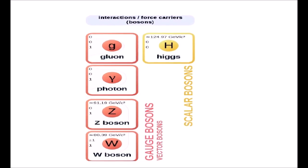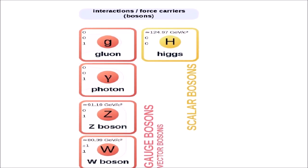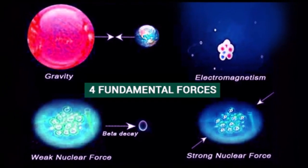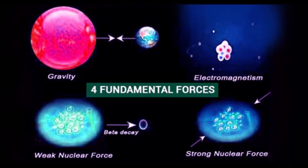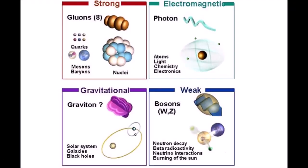In the boson series, we have to add the fundamental forces. The gluon carries the strong nuclear force. The Z boson and W boson carry the weak nuclear force. And the photon carries the electromagnetic force.